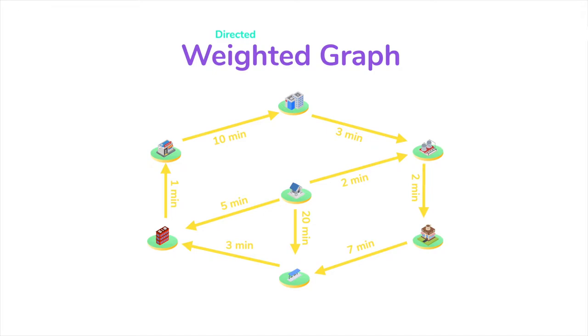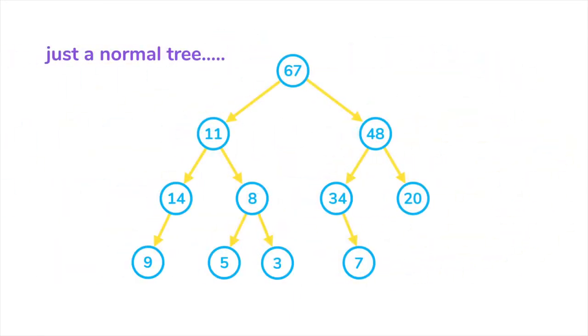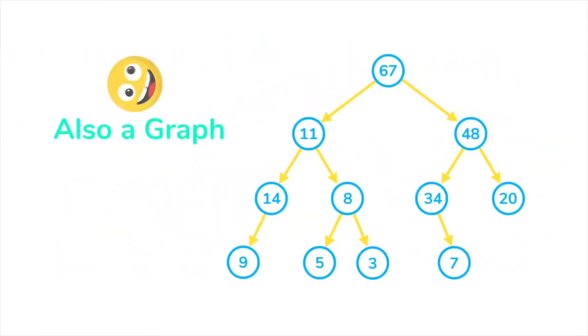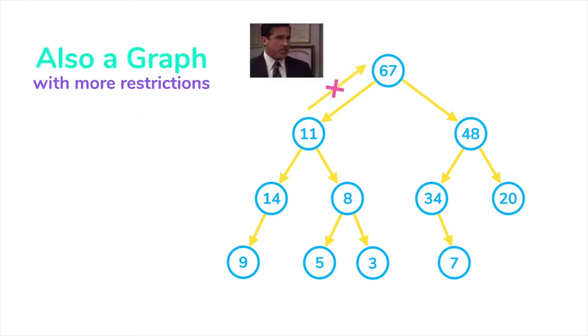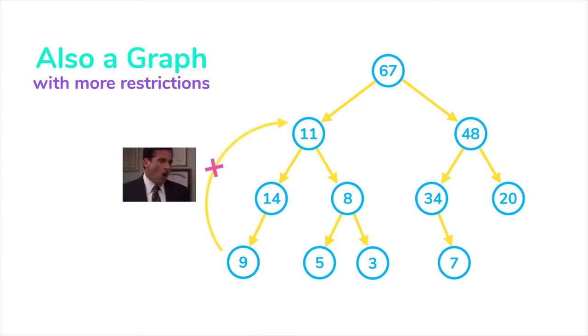You might have also noticed that the tree structure is also a type of a graph, but it has more restrictions or rules. For example, children cannot point to a parent, no cycles are allowed, or if it's a binary tree there should be only maximum of two nodes as children, and so on.